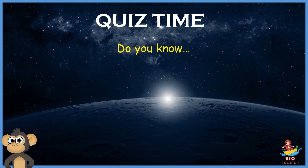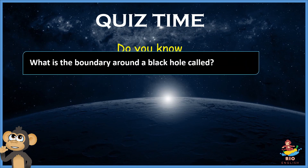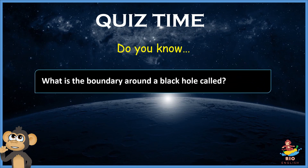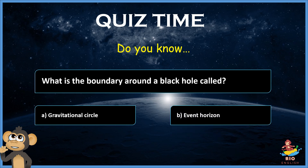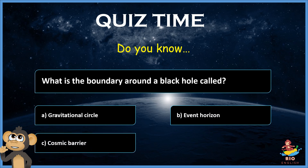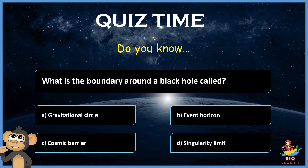Do you know? What is the boundary around a black hole called? A. Gravitational circle. B. Event horizon. C. Cosmic barrier. D. Singularity limit. Please leave your answer below.